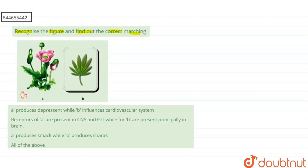Looking at the diagram mentioned in the question, plant A represents the opium plant, commonly called the poppy. If we talk about the second plant, these are the leaves of cannabis — cannabis sativa.